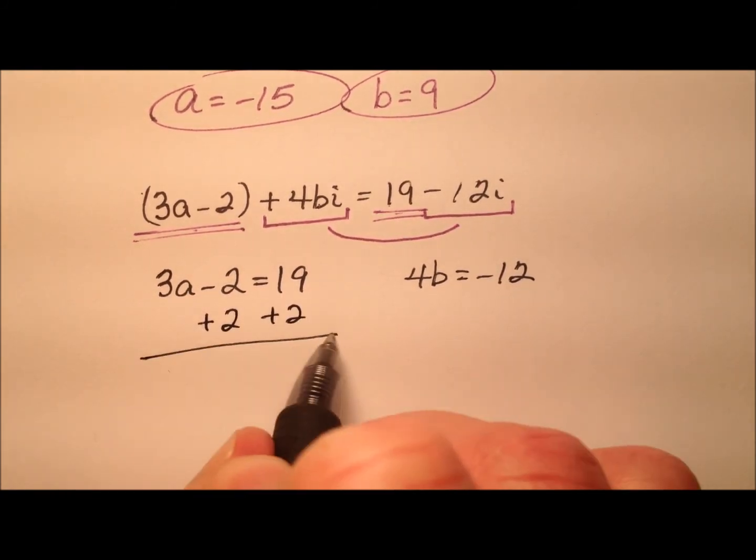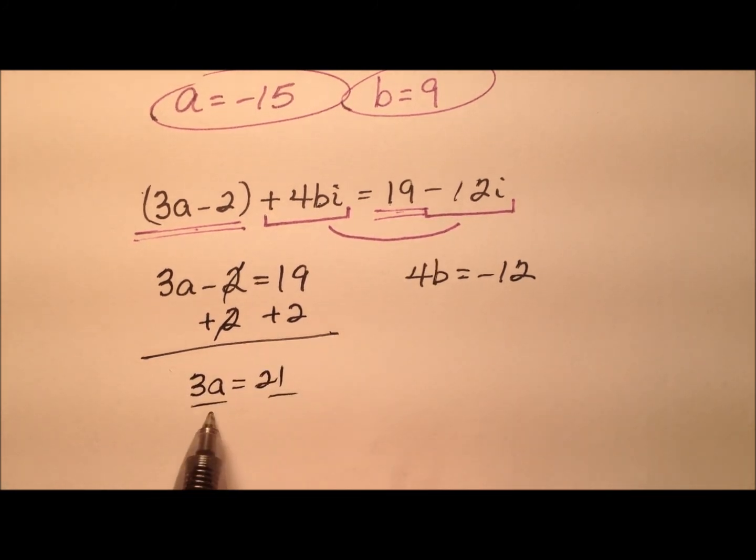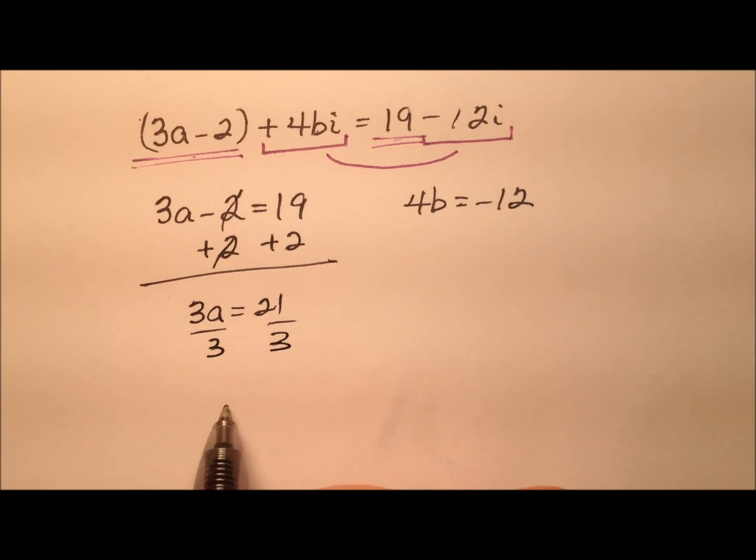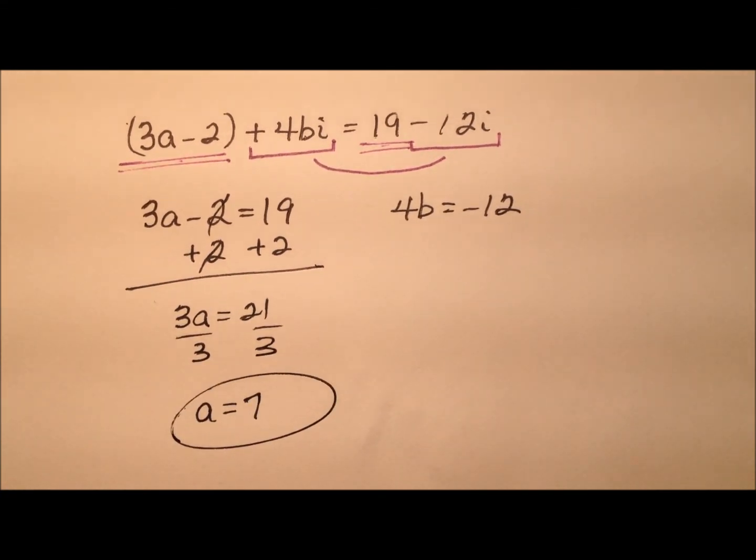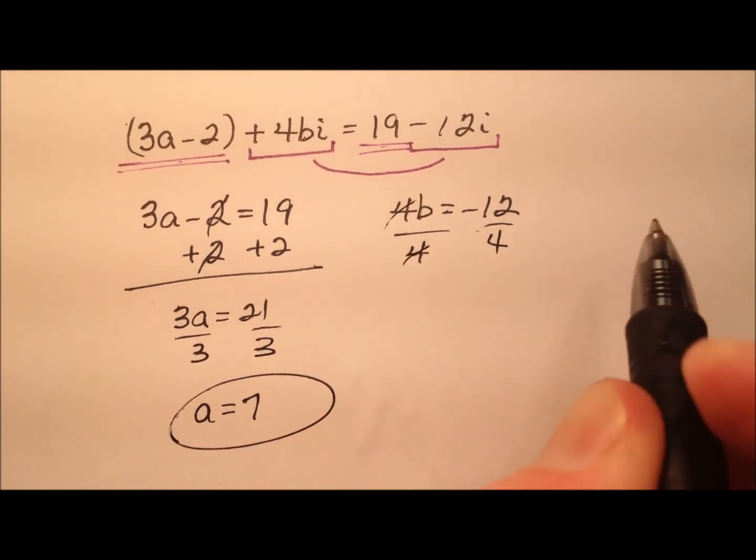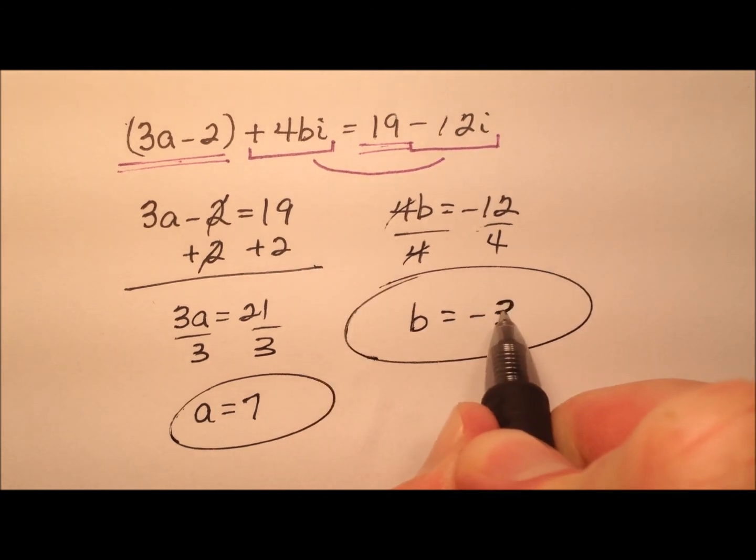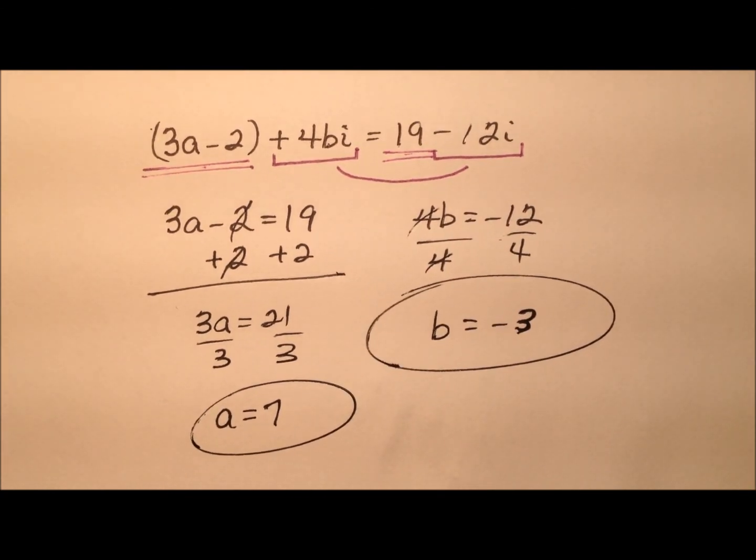Okay? So let's go ahead and add 2 to both sides. So 3a equals 21. A quick division tells us that a is going to be 7. And for the second one, a quick division here tells us that b is going to be negative 3. So they're the two values for a and b that will make this equation true.